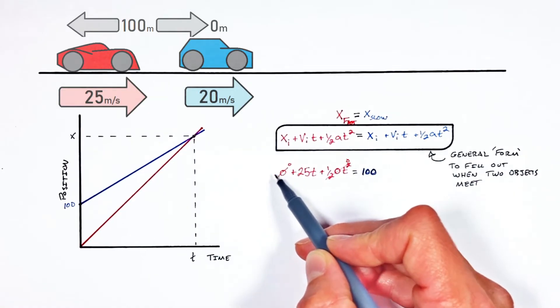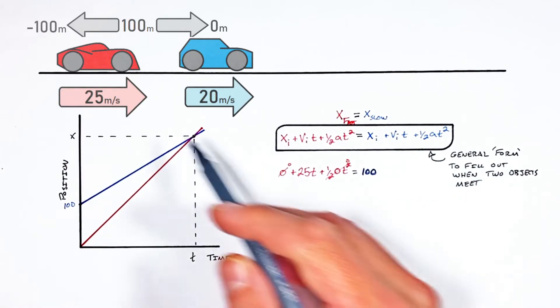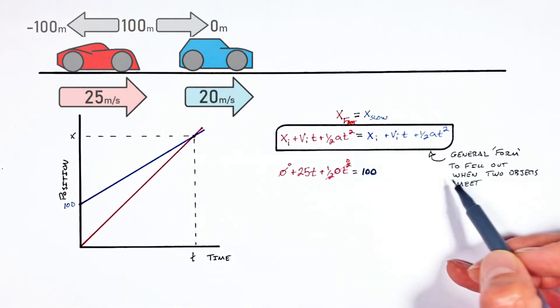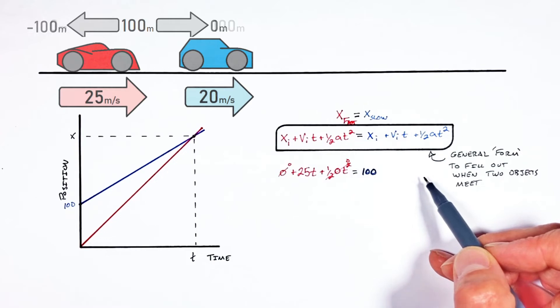But over here the initial position would have been negative 100. Negative because the fast car was starting 100 meters behind. Ultimately it's all going to wash out in the math here though.